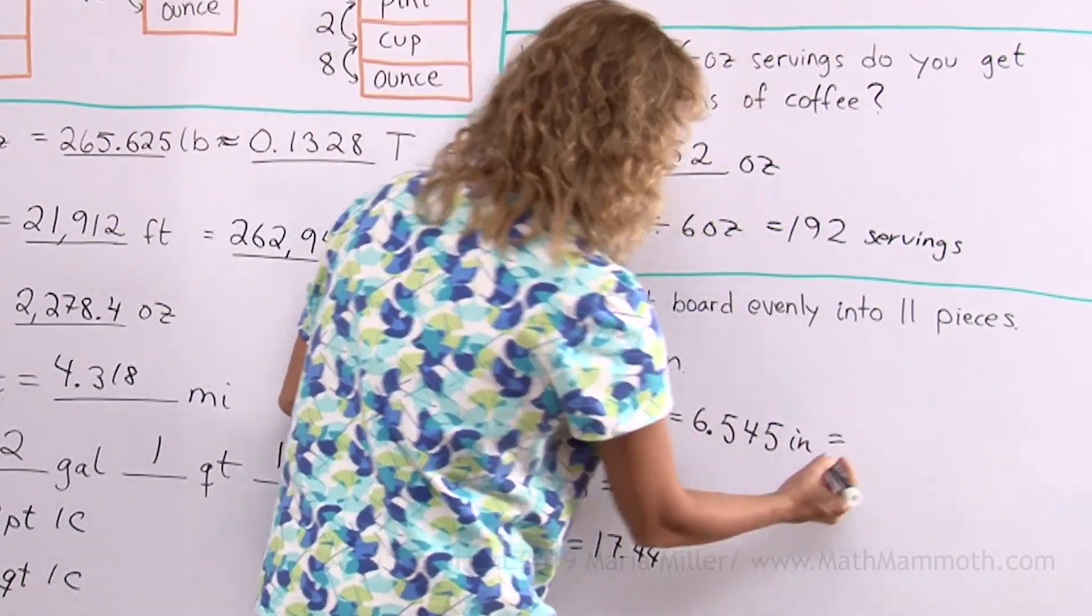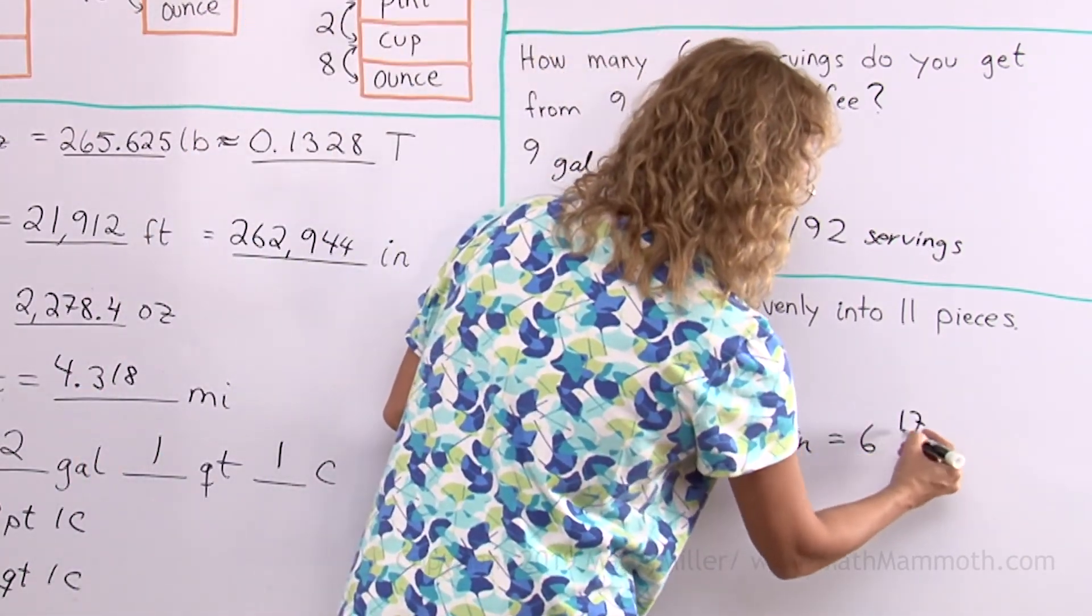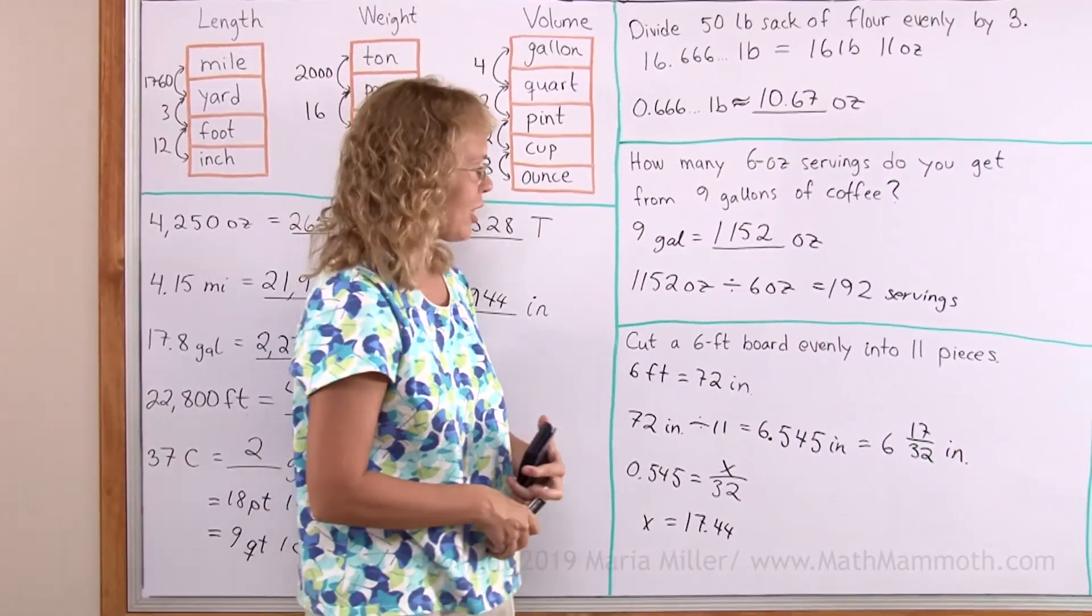So, now we need to drop those decimals. So we will get... This is actually 6 and 17 over 32 parts of an inch, if you need to measure with your measuring tape.